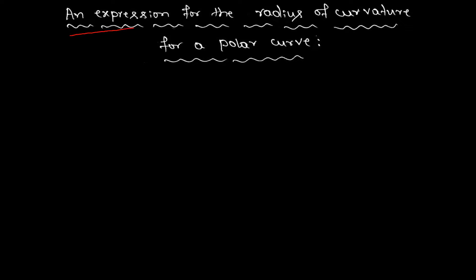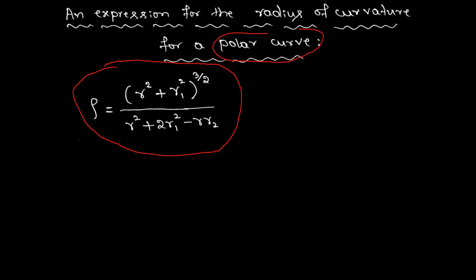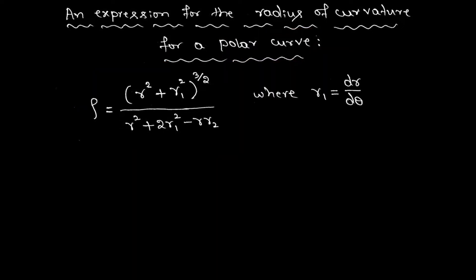Let us see an expression for the radius of curvature for a polar curve. The formula for radius of curvature when the curve is given in the polar form — that means the polar curve is of the form r is equal to f of theta — where r1 is dr by d theta, and r2 is d squared r by d theta squared.